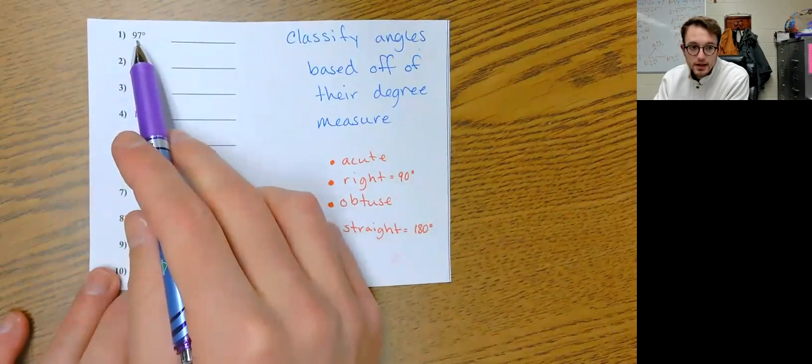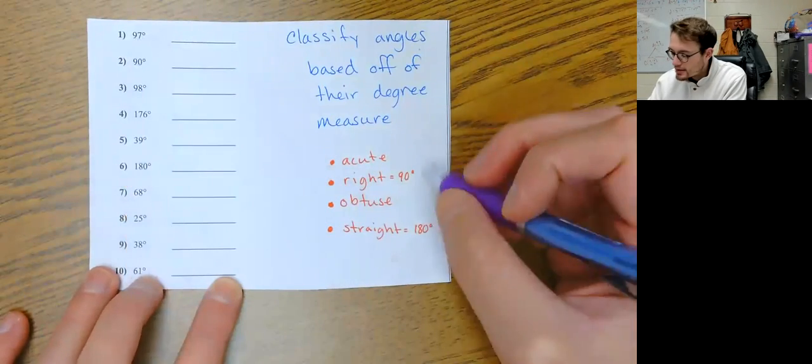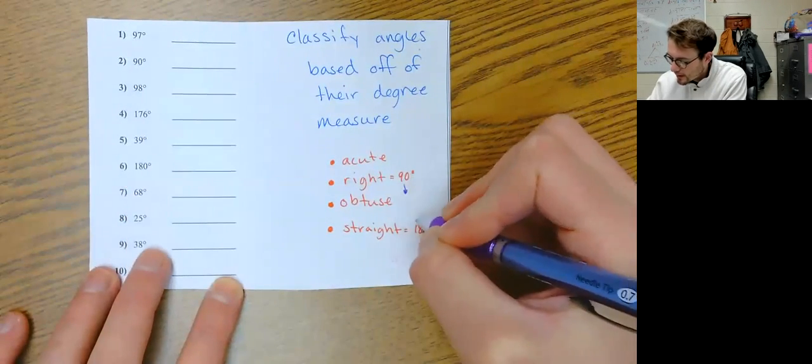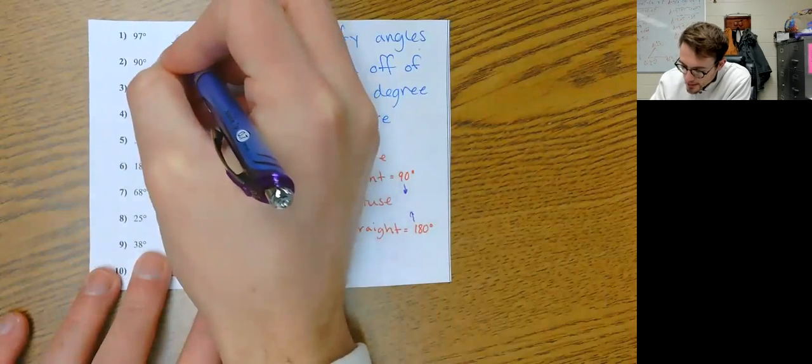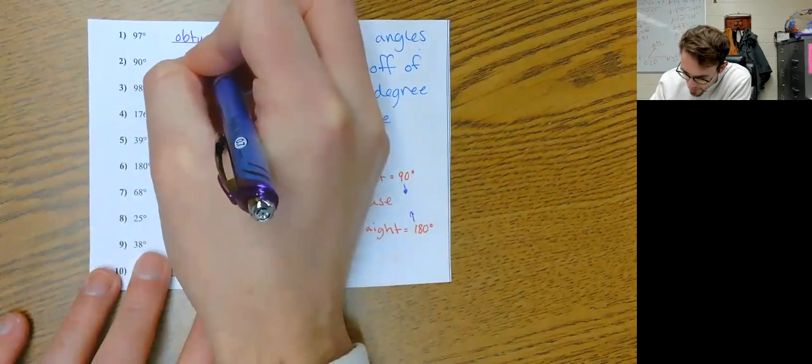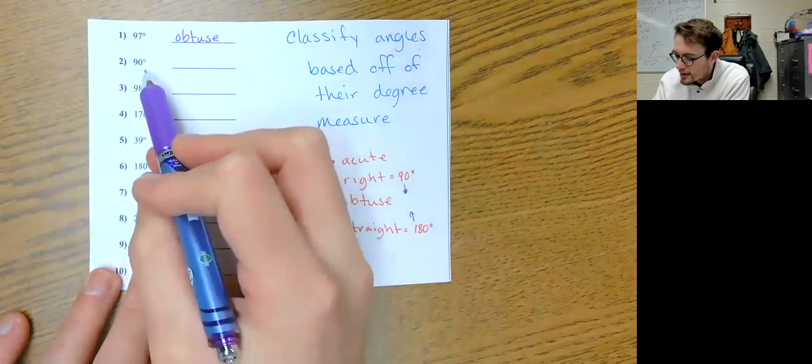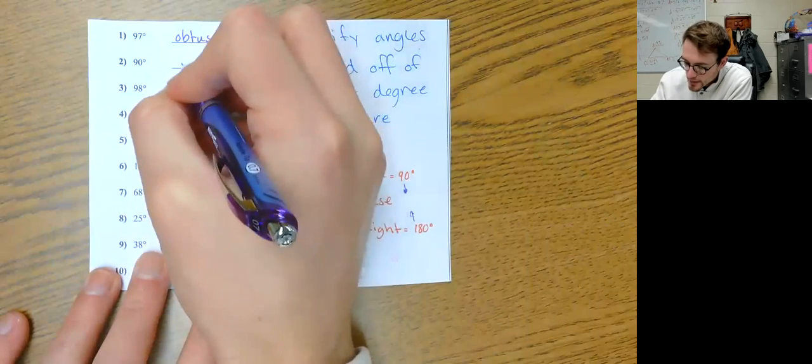This 97 degrees is between - it is between 90 and 180, so that makes it obtuse. So this one would be obtuse. A 90 degree angle is a right angle, so this would be right.